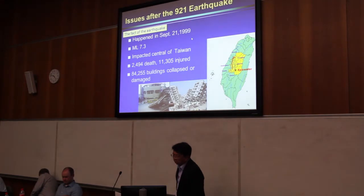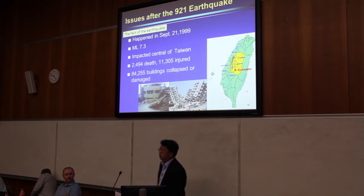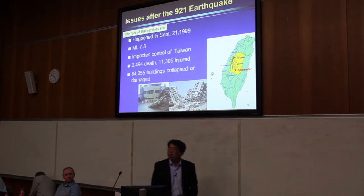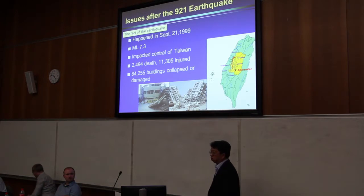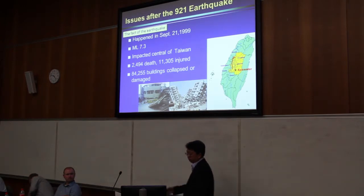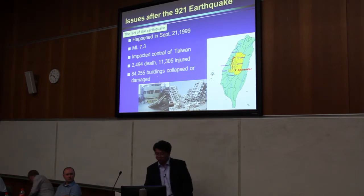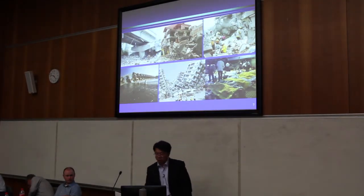Now we are talking about the first major earthquake — we call it the 921 earthquake. It happened in 1999 in the center of Taiwan. It was about 7.3 on the Richter scale, with about 2,050 people killed and more than 84,000 buildings collapsed. You can see this kind of street building and condominium buildings that collapsed, as well as bridges.